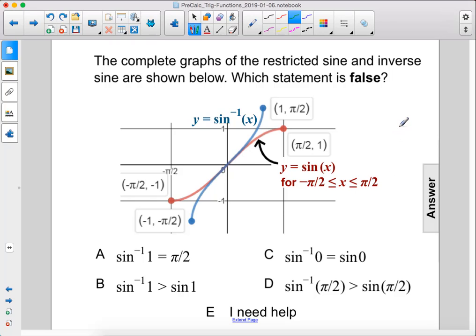The complete graphs of the restricted sine and inverse sine are shown below. Which statement is false? Arc sine of 1 equals pi over 2.